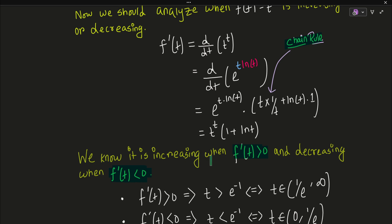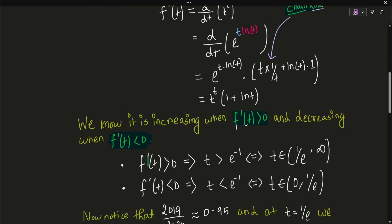Since t^t is always positive, the sign of f'(t) depends entirely on (1 + ln t). When 1 + ln t > 0, we get t > e^(-1) = 1/e, so the function is increasing on (1/e, ∞). When 1 + ln t < 0, t belongs to (0, 1/e), so the function is decreasing on (0, 1/e).